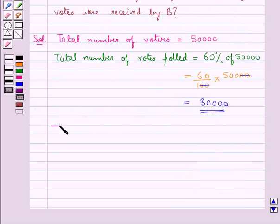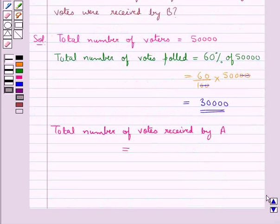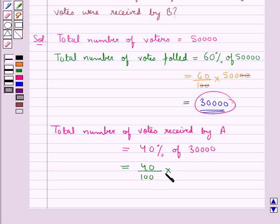Next we find out the total number of votes received by A. This is equal to 40% of the polled votes. Now the polled votes are 30,000, so this is equal to 40% of 30,000, equal to 40 upon 100 into 30,000. Now on solving this we get 12,000.